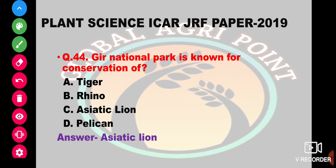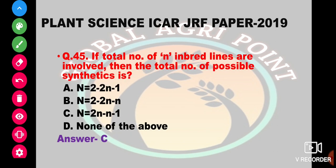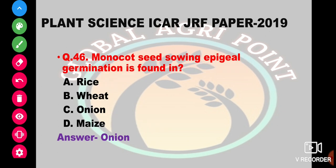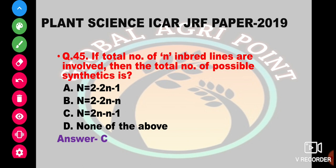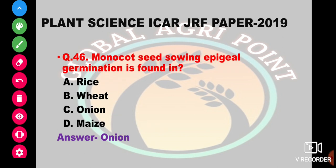If the total number of inbred lines involved is n, then the total number of possible synthetics is: n equals 2 minus 2n minus 1, or 2n minus n minus 1, or none of the above. The correct answer is 2^n minus n minus 1.